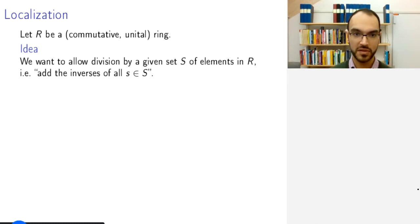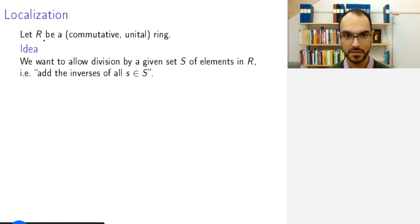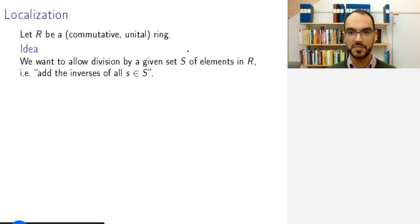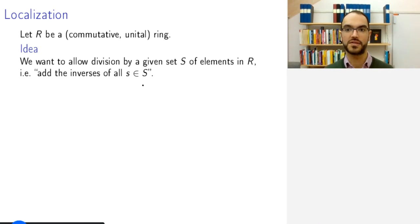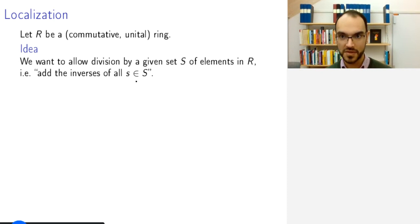We start with a unital commutative ring R, and we look at a suitable set of elements in R. We want to invert these elements — that is, we want to add to the ring R all the inverses of the elements in S, which are not defined in R, so we want to be able to define that.